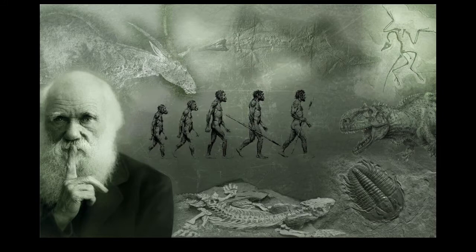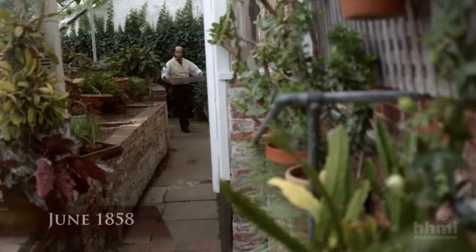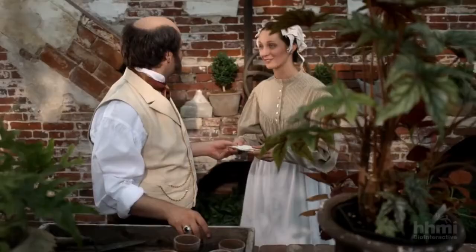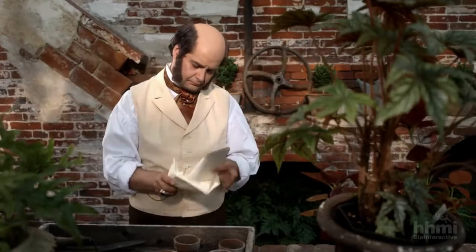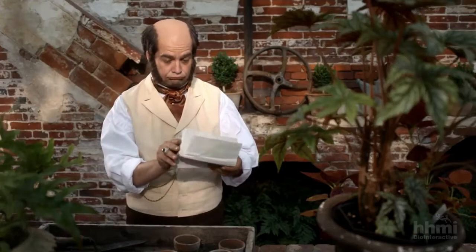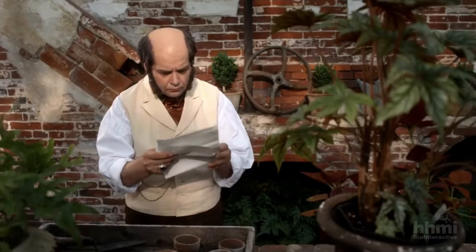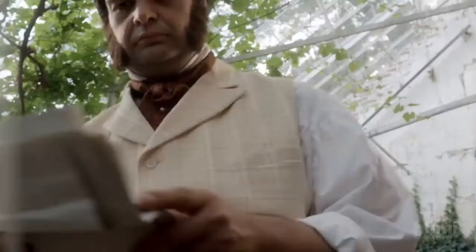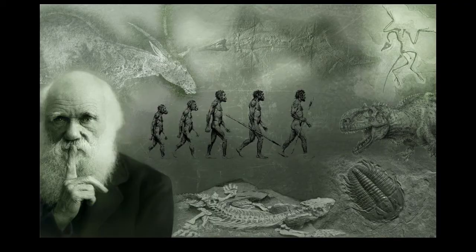Most of you have heard of Charles Darwin, but did you know that by the summer of 1858, at the age of 50, Darwin had written a quarter of a million words on evolution and published none — until he received a letter that compelled him to go public. This letter came from a young naturalist named Alfred Russell Wallace, who described a theory of evolution by means of natural selection and wanted Darwin's advice on how to publish. This theory was the exact same theory Darwin had been working on for 20 years, and he had no intentions of publishing at the time. Reading it, Darwin realized that if he didn't go public quickly, Wallace would get credit for the idea.